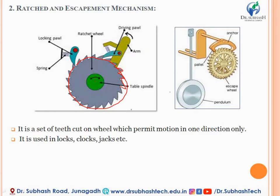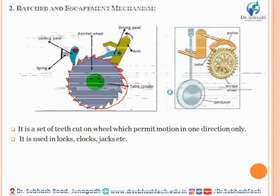Along with construction, the ratchet and escapement mechanism is also used in locks, clocks, jacks for lifting loads, and many more applications where controlled one-directional motion is required.